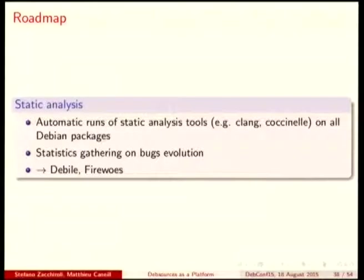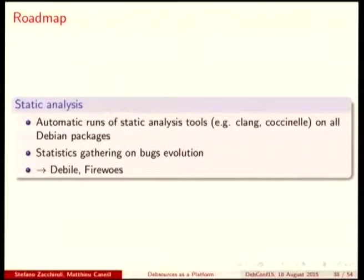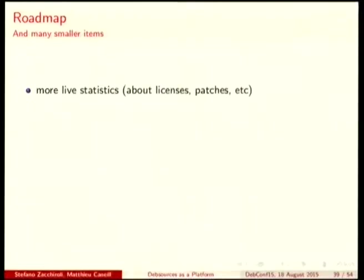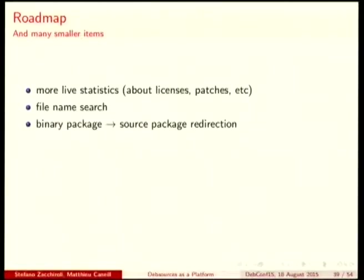Now the roadmap — the new features we would like to have in the coming months. The big picture is to use Debsources as a display platform for something bigger called Dbill, and to run automatic runs of static analysis tools. Debsources could be used to display the results of these tools along with the messages they produce — we can embed these messages in the pop-up feature we saw before. We could also gather statistics about the evolution of bugs and how they disappear from release to release. We would like to have more live statistics about licenses, patches, and their evolution. File name search is currently not possible. And the link between binary packages and source packages — for now we can only look for source packages.